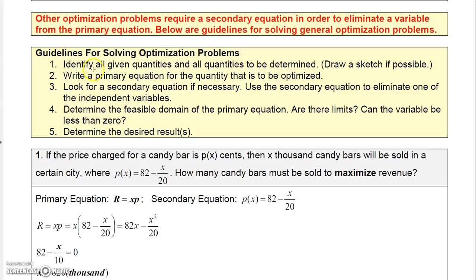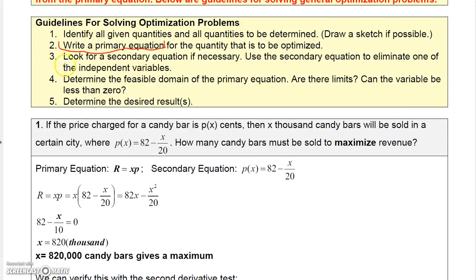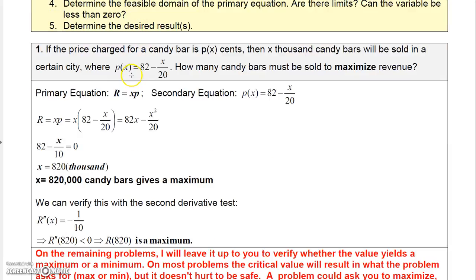To solve optimization problems: first, identify all given quantities and quantities to be determined, drawing a sketch if needed. Second, determine the primary equation — the equation representing what you want to minimize or maximize. Third, find a secondary equation that can eliminate one independent variable from the primary equation. Fourth, determine the feasible domain if there are any limits, then determine the desired result.